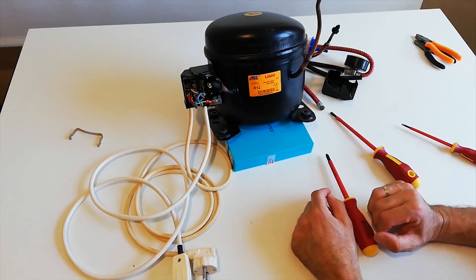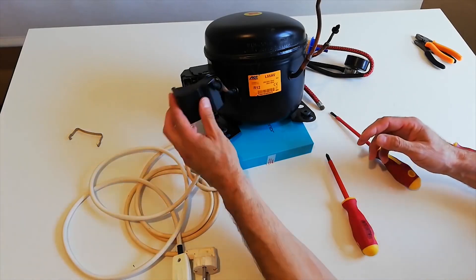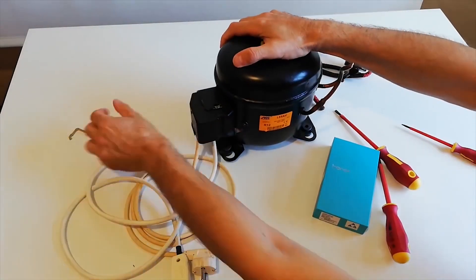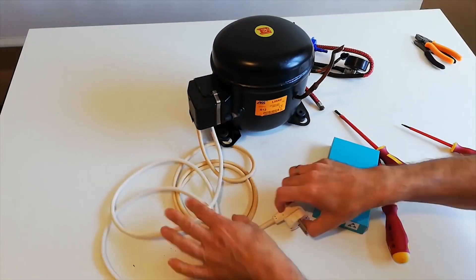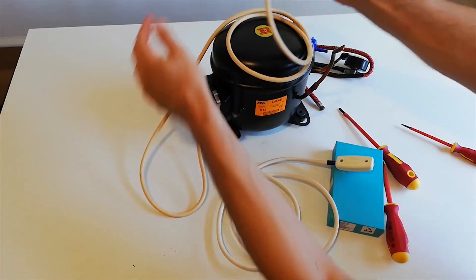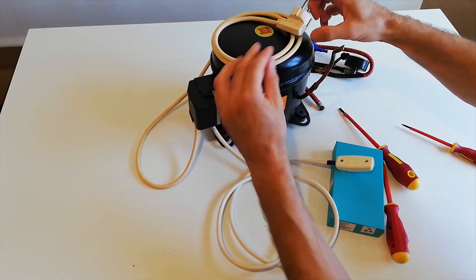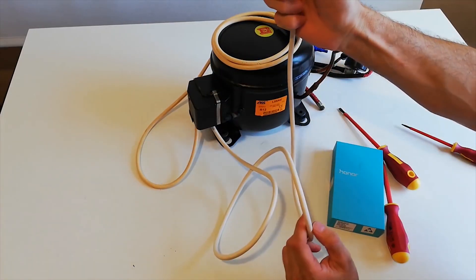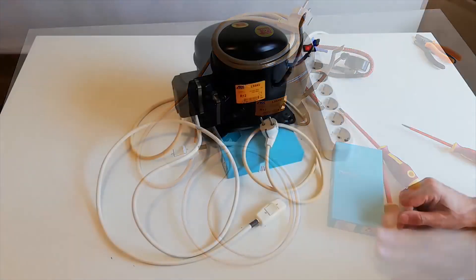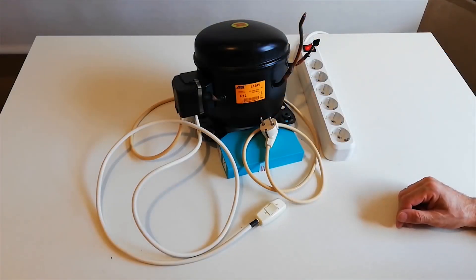The connection has been made and we are now closing the junction box. So through this power cord, we supply power to our compressor and we have a switch, which we can turn our compressor on and off as desired. And here our compressor is ready to be connected to the electric network.